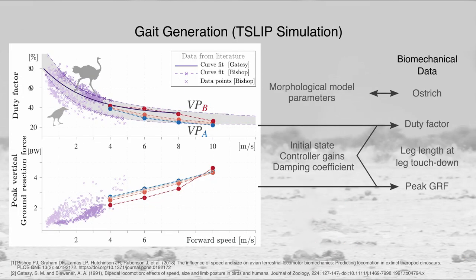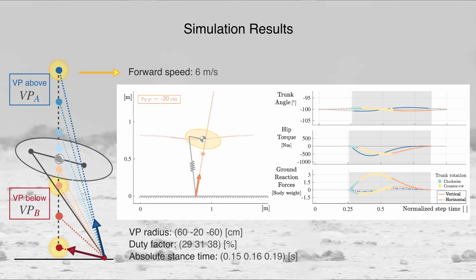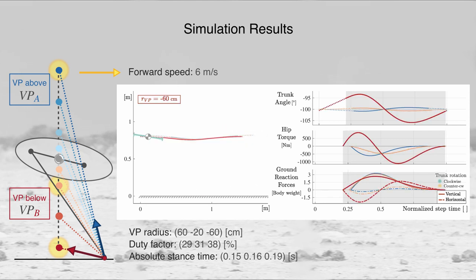In our simulations, we select the morphological parameters of our model from the literature to match an ostrich of 80 kg. We identify the initial state, controller gains, and damping coefficient such that the resulting gaits yield duty factor and peak vertical ground reaction force values similar to those reported in biomechanical measurements. We present three example gaits: one with a virtual point 60 cm above the center of mass, and two with virtual points 20 and 60 cm below the center of mass.